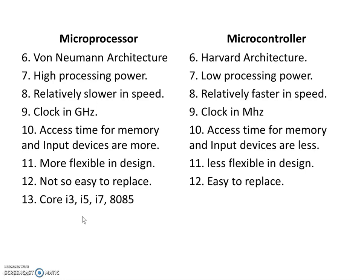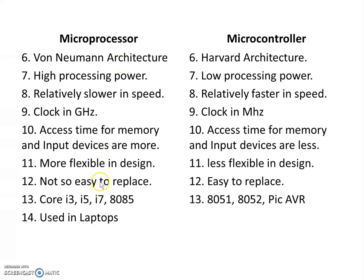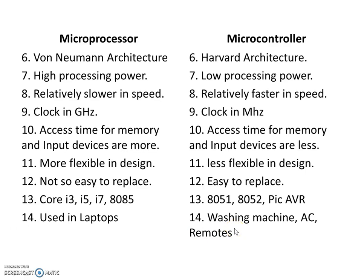Examples of microprocessors include Core i3, i5, i7, and 8085 — these are examples of microprocessors used in laptops. Examples of microcontrollers include 8051 and 8052 AVR. Generally, microprocessors are used in laptops and various other electronic devices, and microcontrollers are used in washing machines and TV remotes. This is all about the difference between microprocessor and microcontroller.